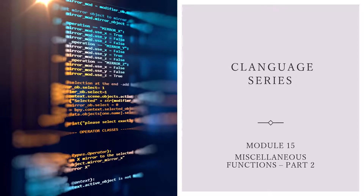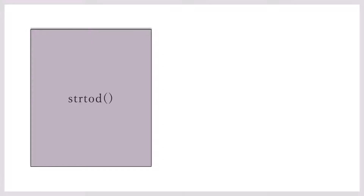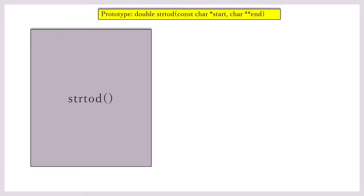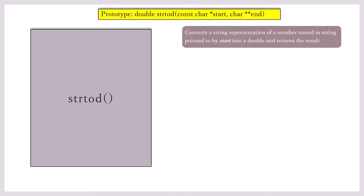Hello and welcome to the second session on miscellaneous functions. We're going to start with the function strtod, or str2double. You can see from the prototype this function returns a double, taking as argument a character string and then a char star star end. This converts a string representation of a number stored in a string pointed to by start into a double and returns the result.